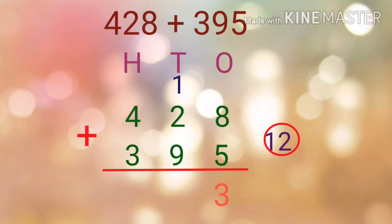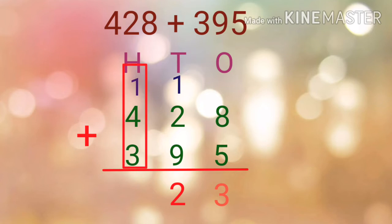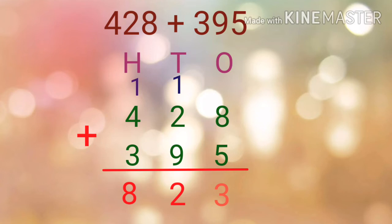So again we have to regroup the number. 2 is written in the 10's place and 1 is carried over to the 100's place. Now the last step is to add the digits in the 100's place. The digits are 1, 4 and 3. Let us add 4 plus 3, which gives 7. Now 7 plus 1 gives 8. So the answer is 823. 428 plus 395 is equal to 823.